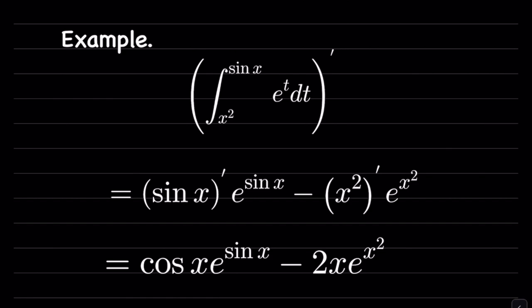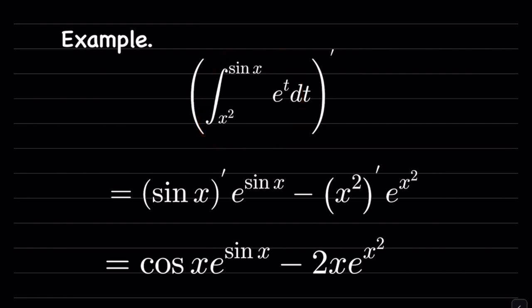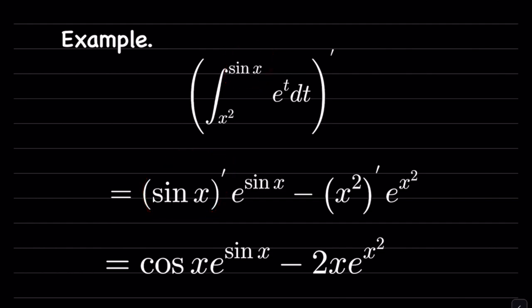Suppose we want to differentiate this function. By using the Leibniz rule, this is going to be the derivative of the upper bound — so that's going to be the derivative of sine — multiplied by this function, but t replaced by the upper bound. So t replaced by the upper bound, which is sine x, gives us e to the sine x.